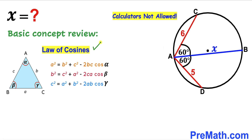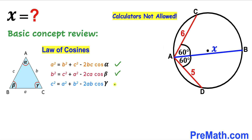Let's talk about the law of cosines. In triangle ABC, vertex A has angle alpha, vertex B has angle beta, and vertex C has angle gamma. The side opposite to vertex A is lowercase a, opposite to B is lowercase b, and opposite to C is lowercase c. We have three options to apply the law of cosines. For the first one: a² = b² + c² − 2bc·cos(alpha). Similarly, for side b use angle beta, and for side c use angle gamma.